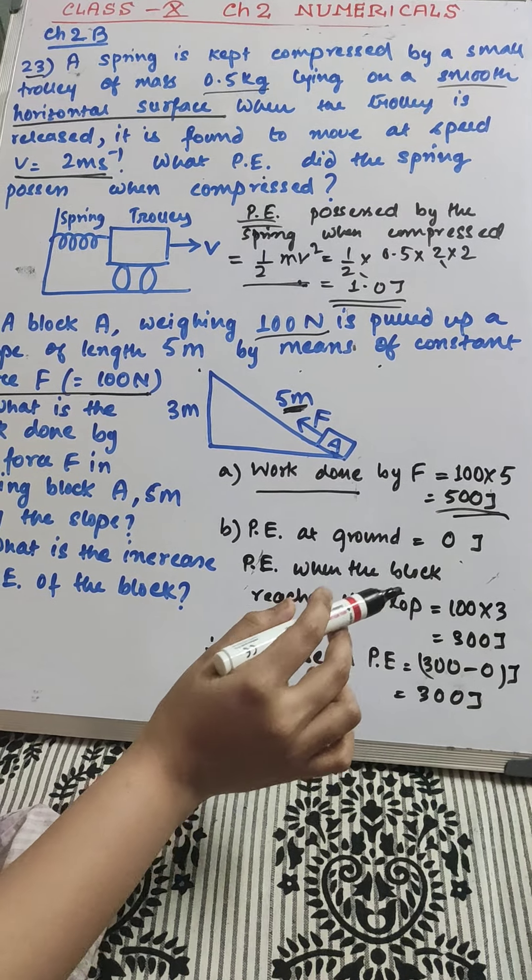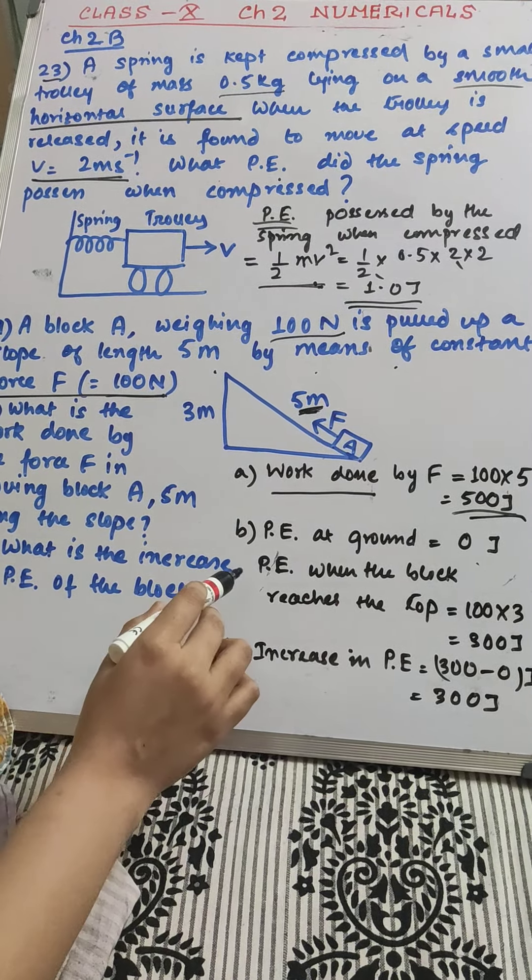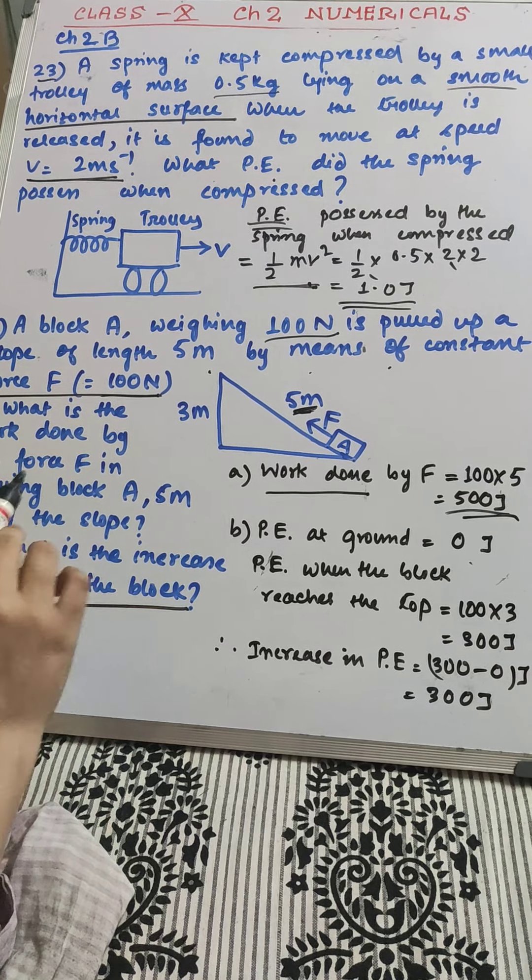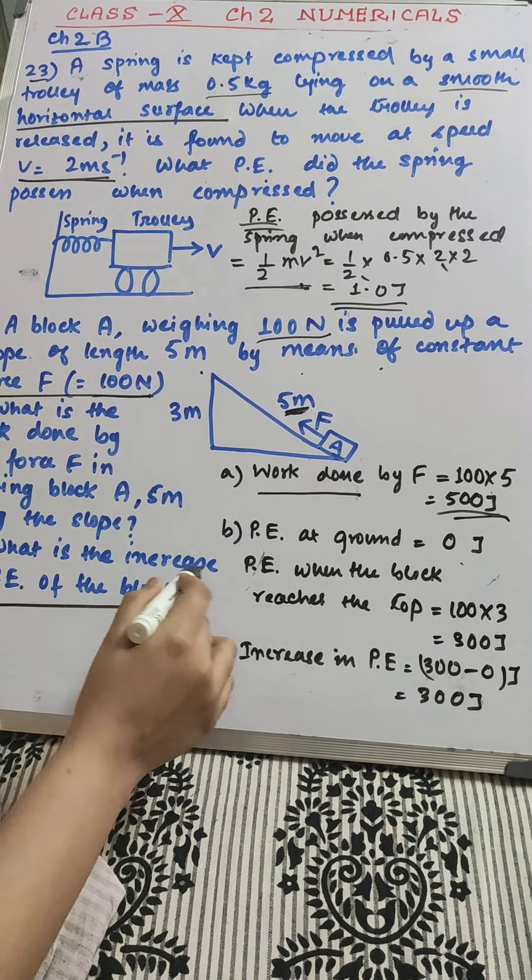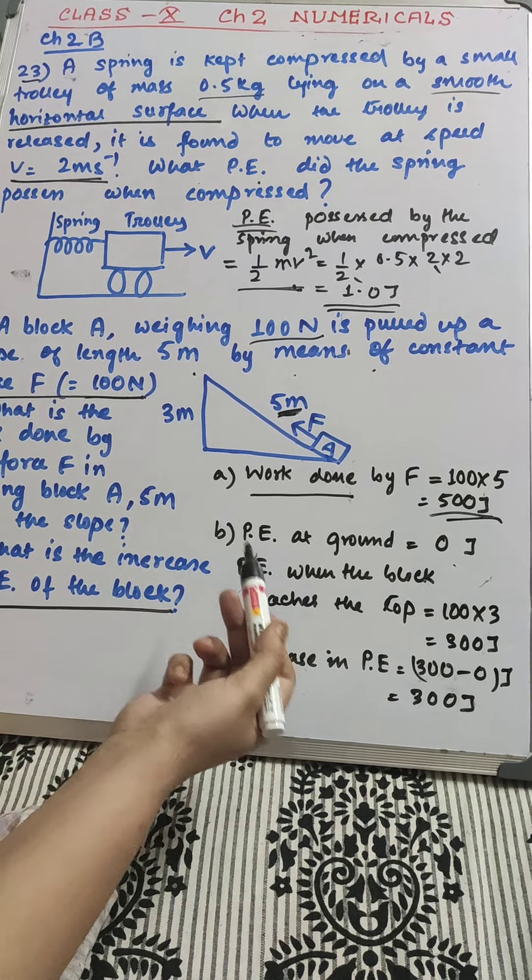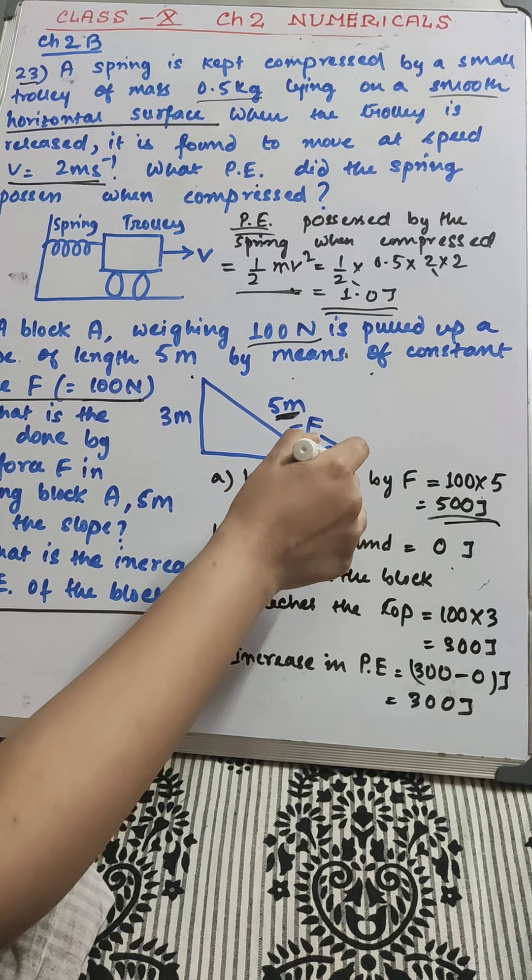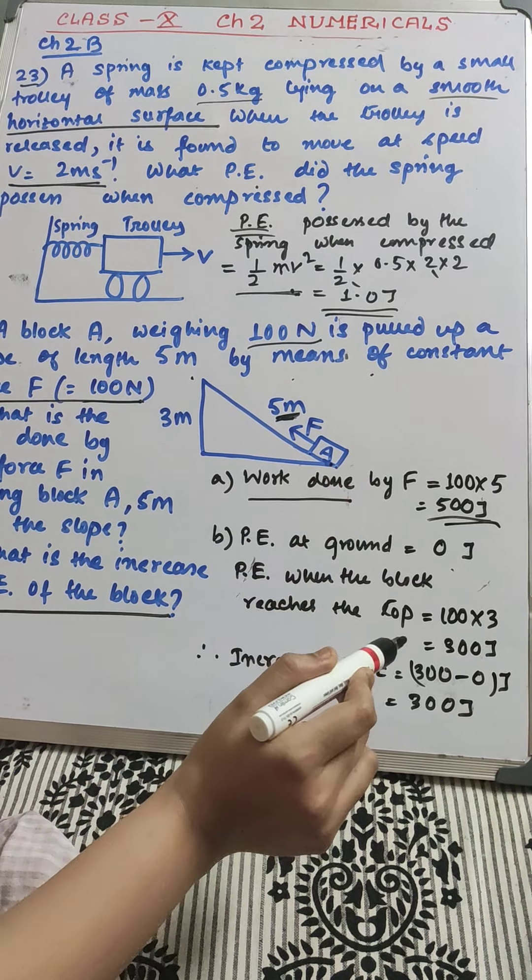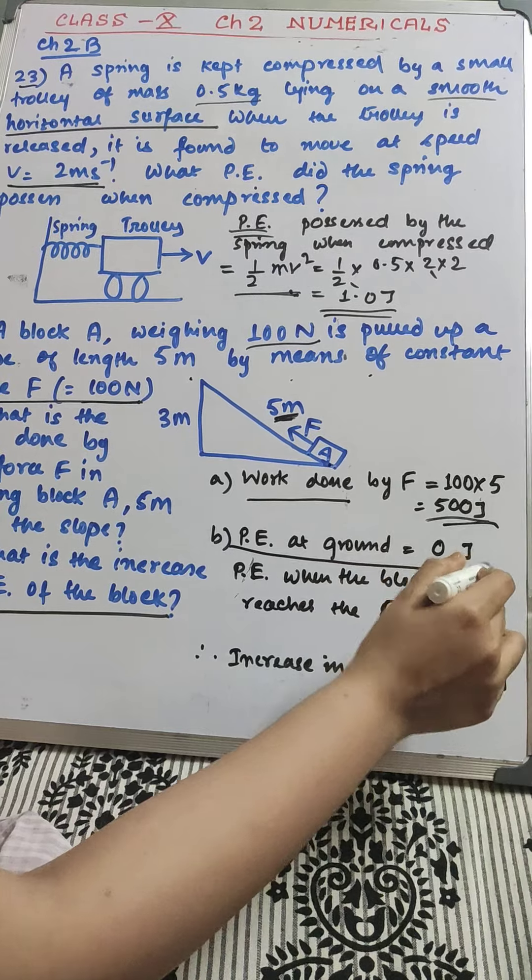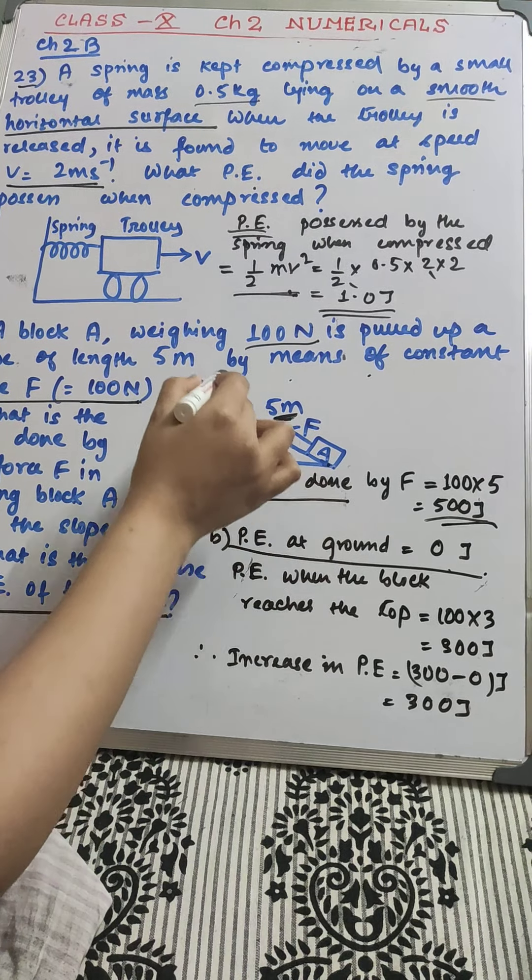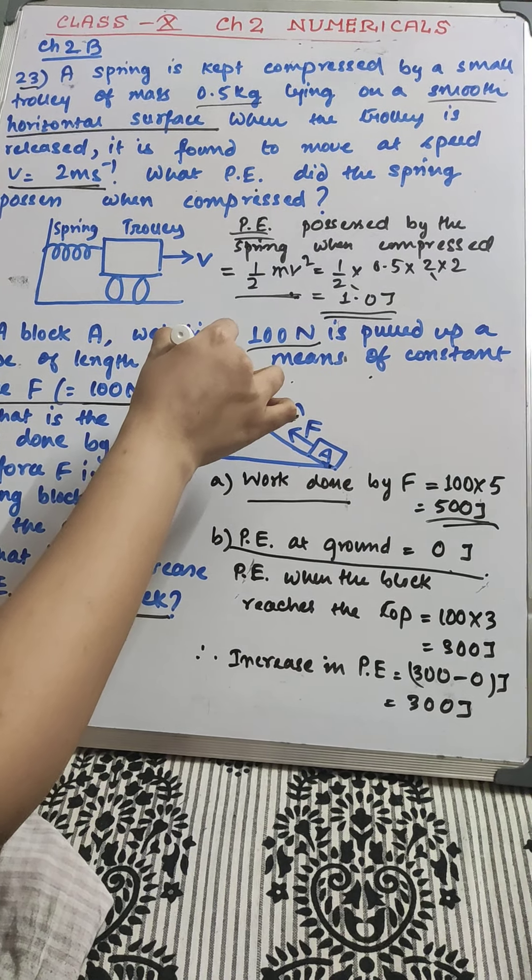So, 500 Joule. Now, the next part is what is the increase in potential energy of the block? Obviously, there will be an increase because initially when at ground, height 0, potential energy 0 Joule. When we move up the block, what is the potential energy? MGH.